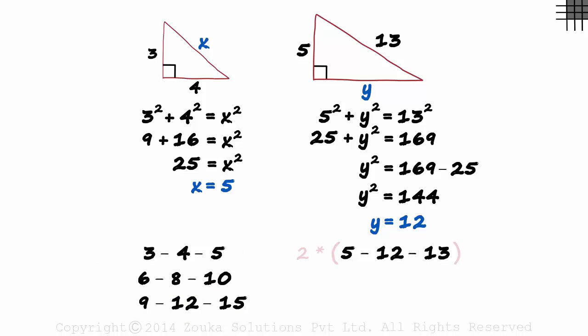If we multiply each of these by two, then ten, twenty-four and twenty-six also form a Pythagorean triple.